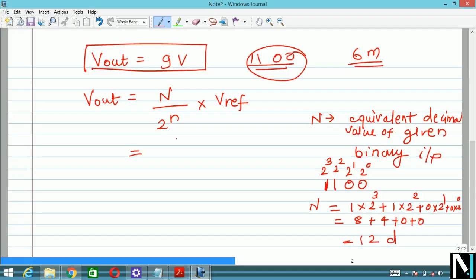So if n is 12 divided by 2 raise to n, your DAC is of 4-bit so 2 raise to 4. This n will become 4 because your DAC is a 4-bit DAC. Always keep in mind if it is mentioned, take down this as small n multiplied by V reference voltage which is 12 volt. So this will be 12 multiplied by 12 divided by 2 raise to 4 is 16. That means 144 divided by 16 and again you will get the answer as 9 volt.